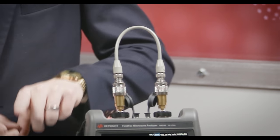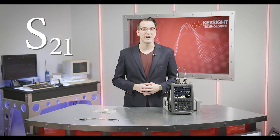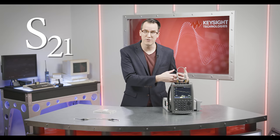For an S21 measurement we're going to output a frequency sweep at a known power from port 1, run the signal through the device under test and see what we get at port 2. It's called an S21 measurement because it tells us what happens on port 2 as a result of what happens on port 1.